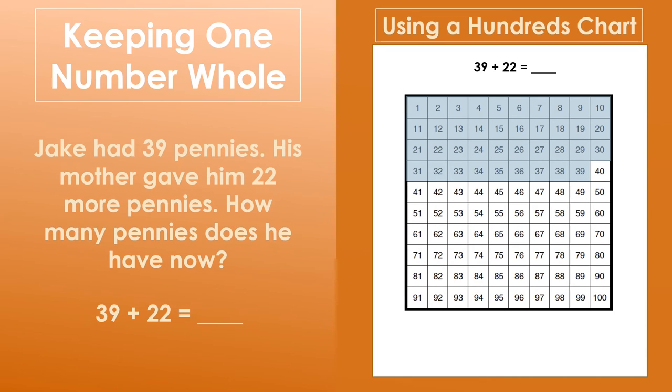Then, we can add on 1 to make the friendly number 40. 39 plus 1 equals 40. Then, we can add on 20. 40 plus 20 equals 60.